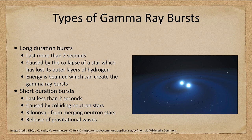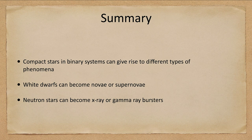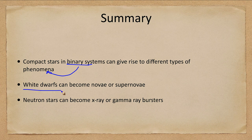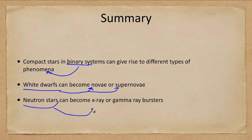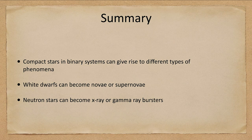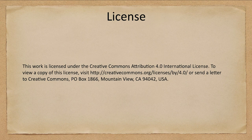Let's finish up with our summary. What we've looked at is that compact stars in a binary system give rise to many different things. A white dwarf can become a nova or a supernova depending on the exact conditions, while neutron stars become X-ray or gamma ray bursters. That concludes this lecture on compact stars in binary systems. We'll be back again next time for another topic in astronomy. Have a great day everyone, and I will see you in class.